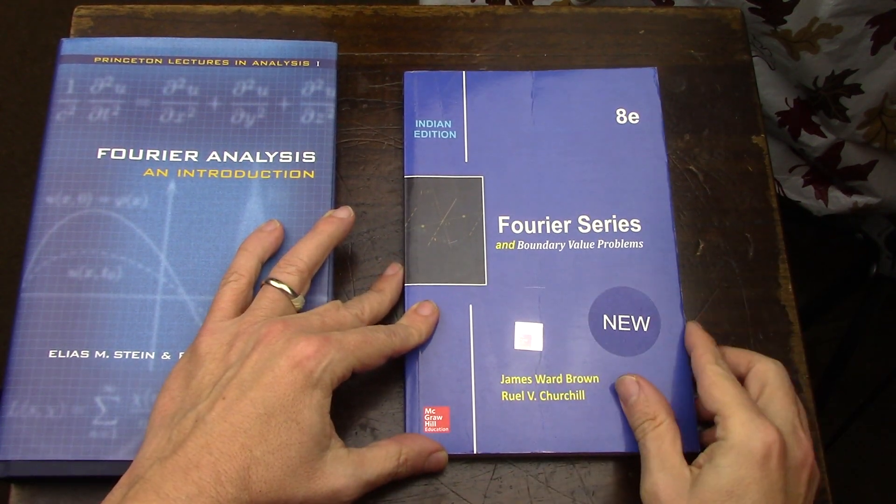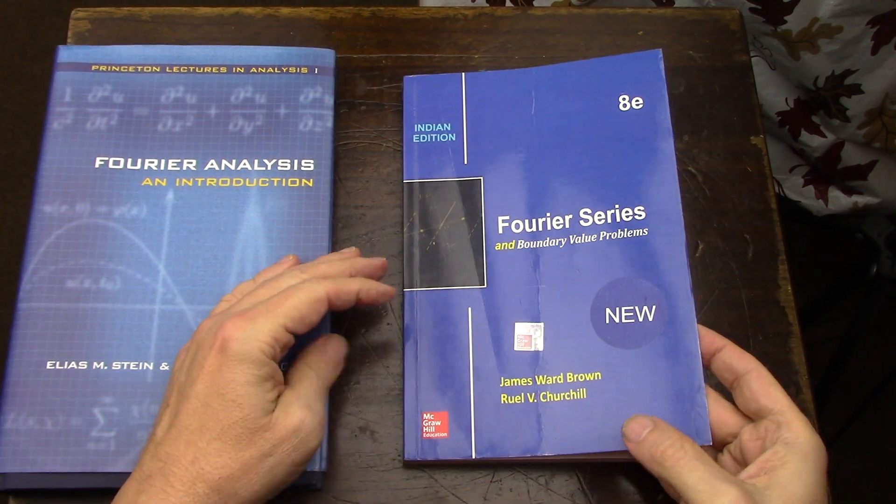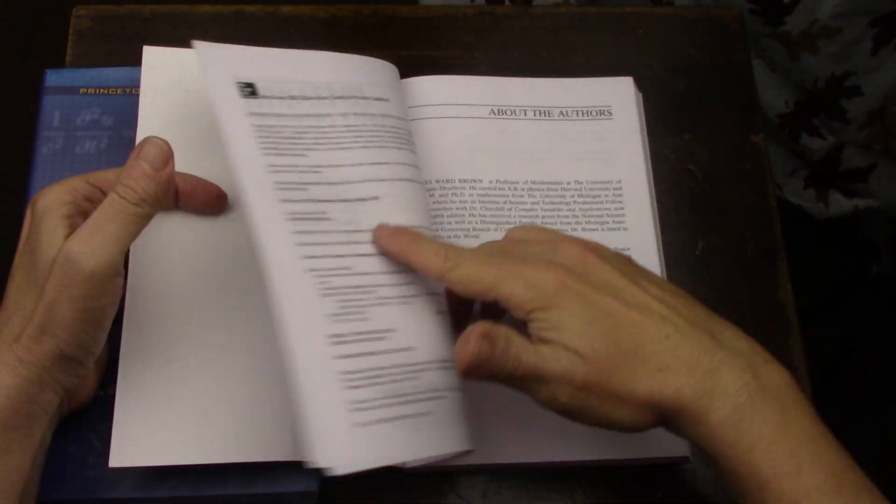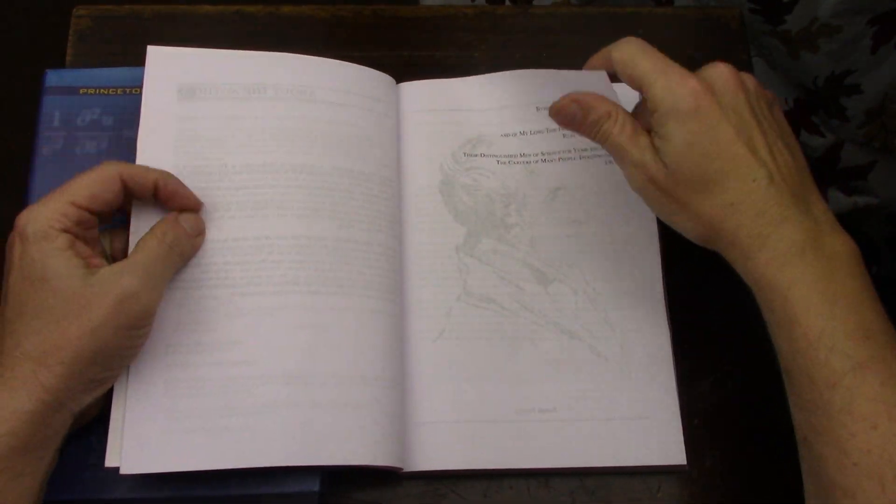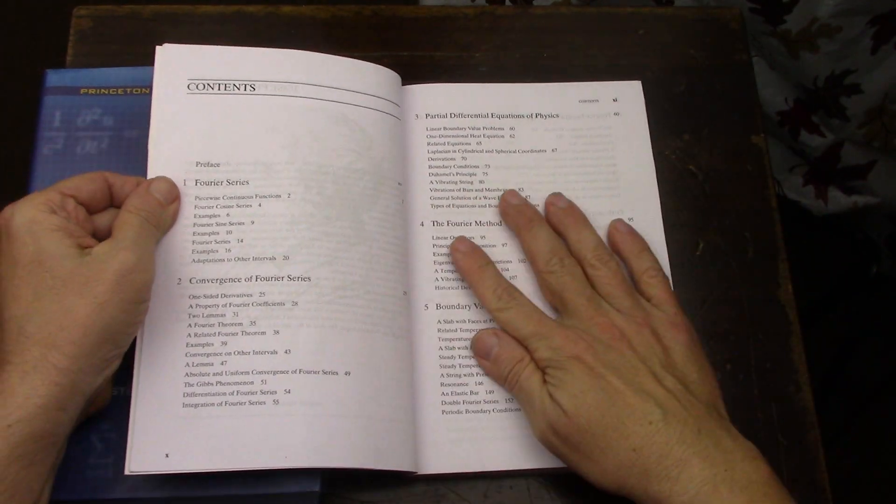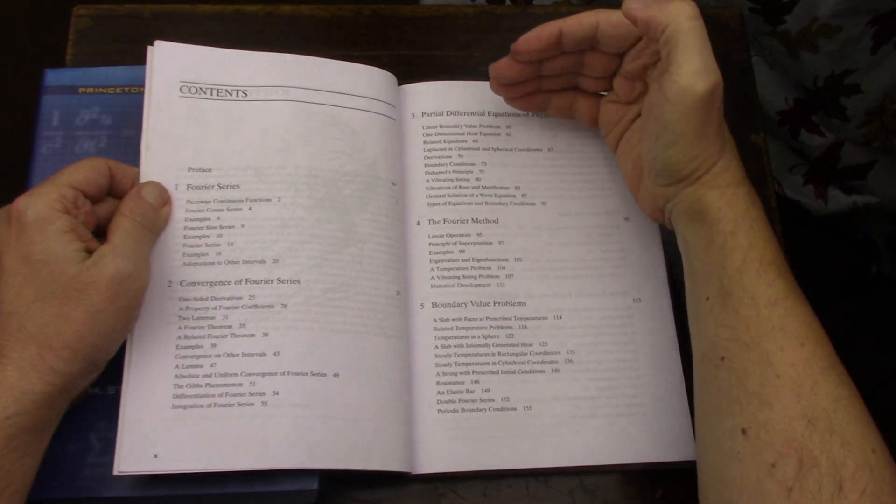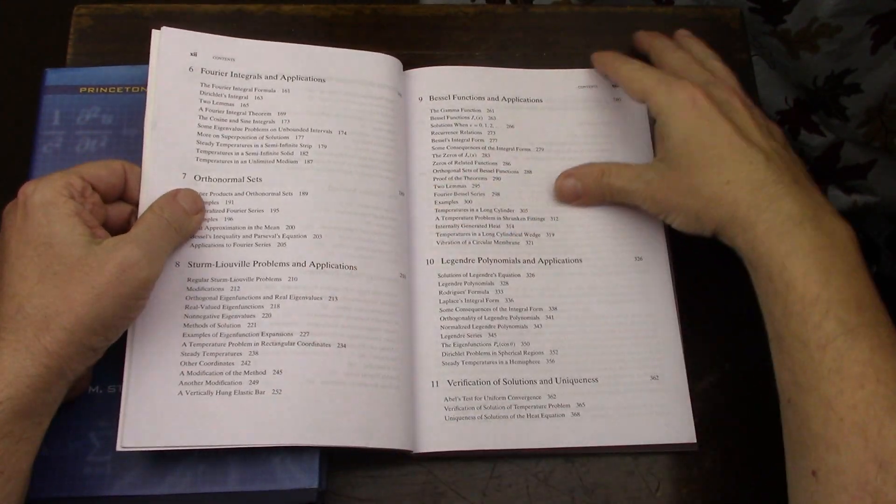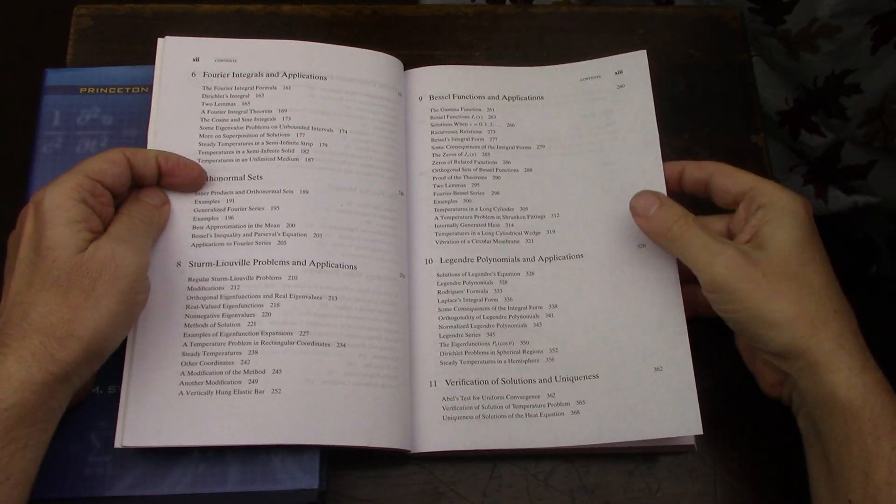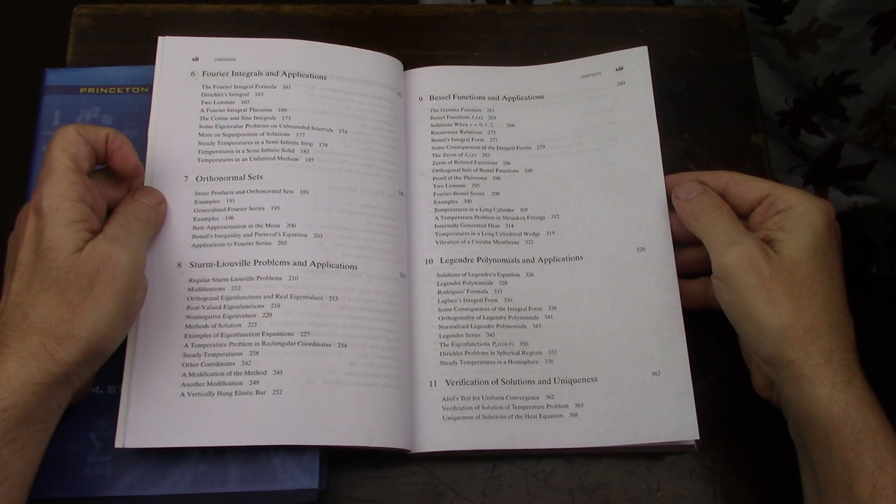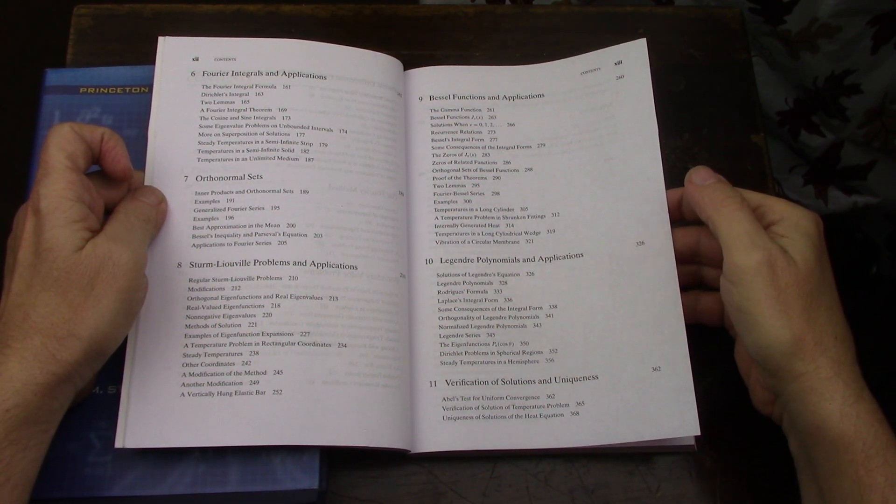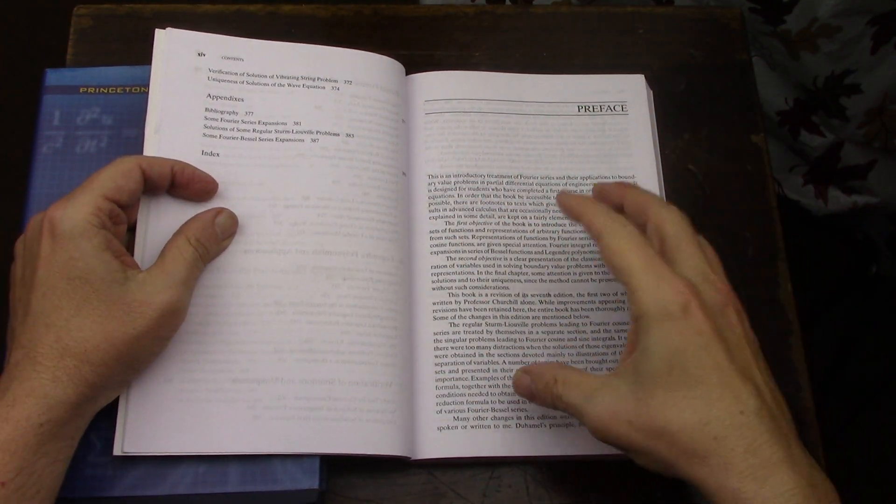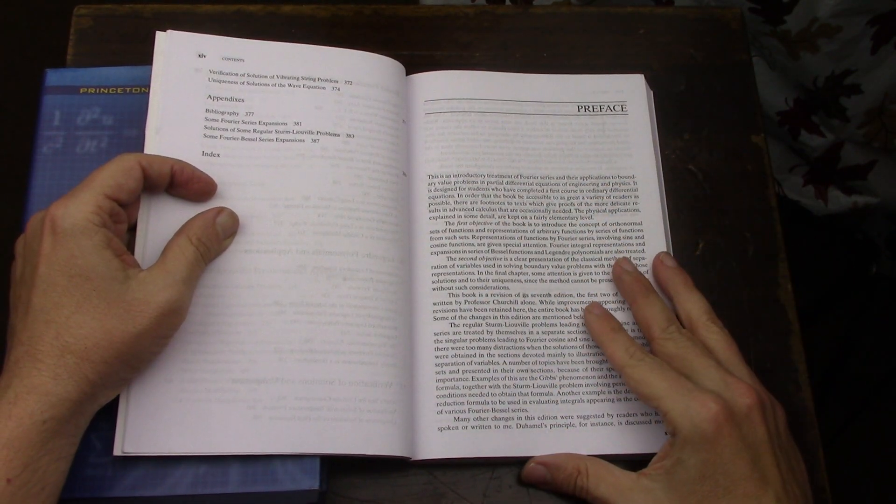And then because that book is a prerequisite, I would do a book like Brown and Churchill's engineering Fourier series book. So it's got boundary value problems, and sure enough when you look at this book, this is the Indian print, you'll see that it's got tons of applications and it's really just a partial differential equations book with all sorts of physical applications from the perspective of Fourier series.